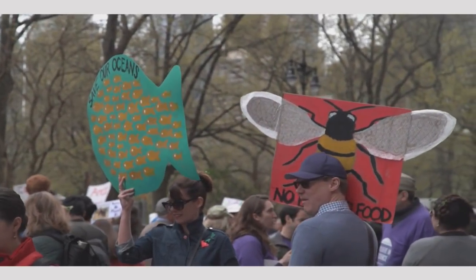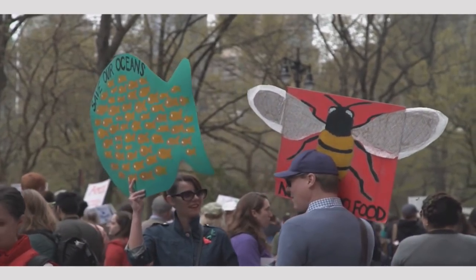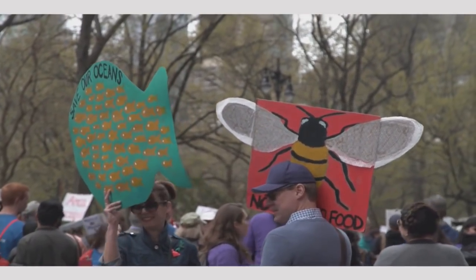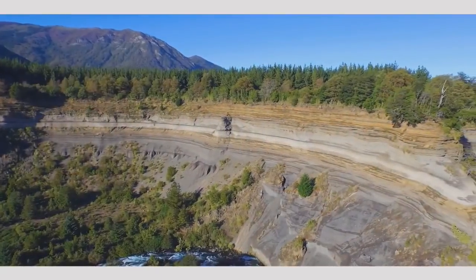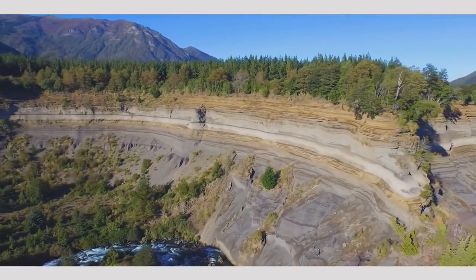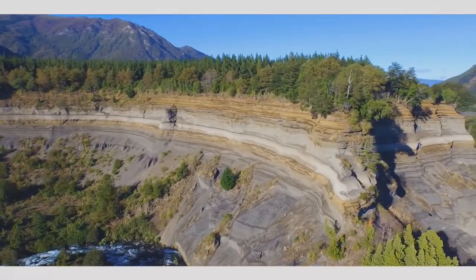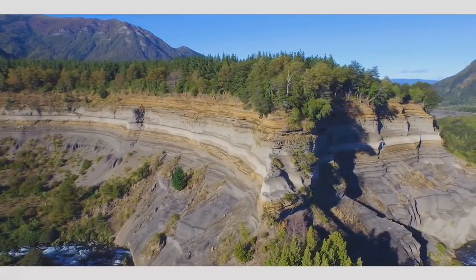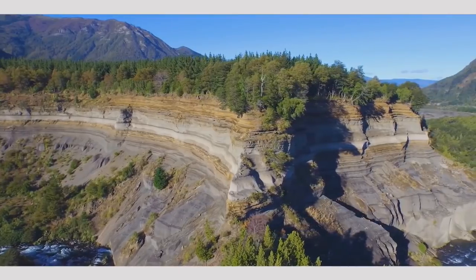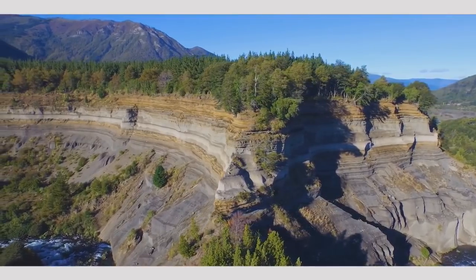Biodiversity itself is not a single concept but can be split up into various scales — for example, ecosystem diversity versus habitat diversity, nucleotide diversity, genetic diversity, species diversity, and phylogenetic diversity. It is essential to accurately classify the spatial and temporal scope of observation.